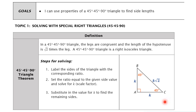Our goal is going to be using 45-45-90 triangles to find side lengths. A 45-45-90 triangle is named after the angles of a certain right triangle — we have a right angle, and then both acute angles are 45 degrees. This actually makes a right isosceles triangle, so the two legs are going to be the same length.